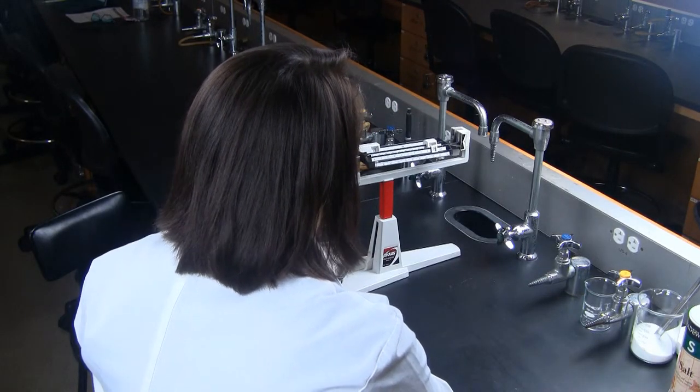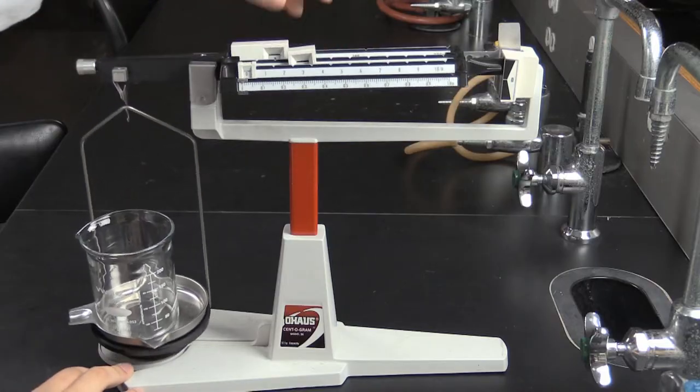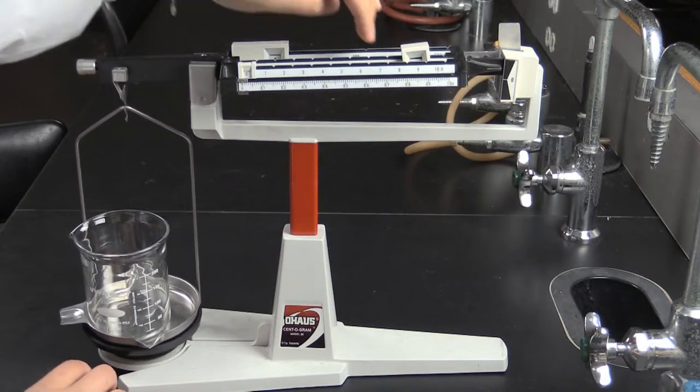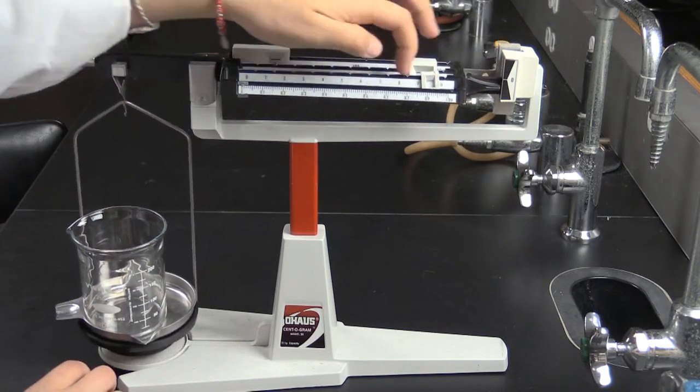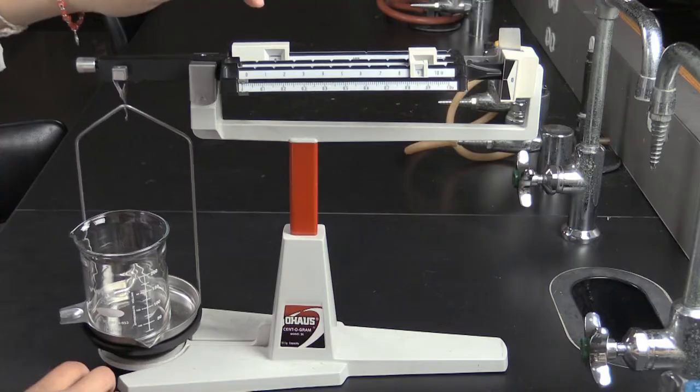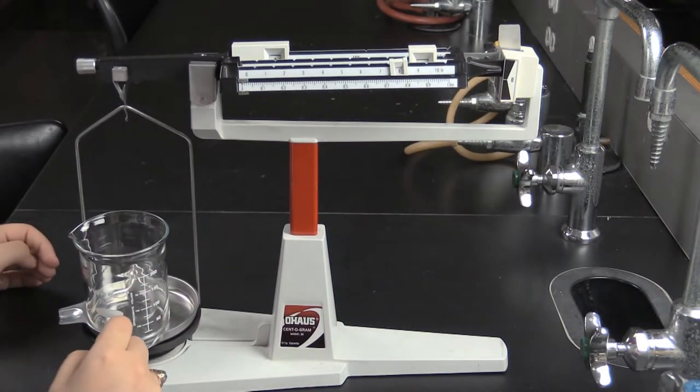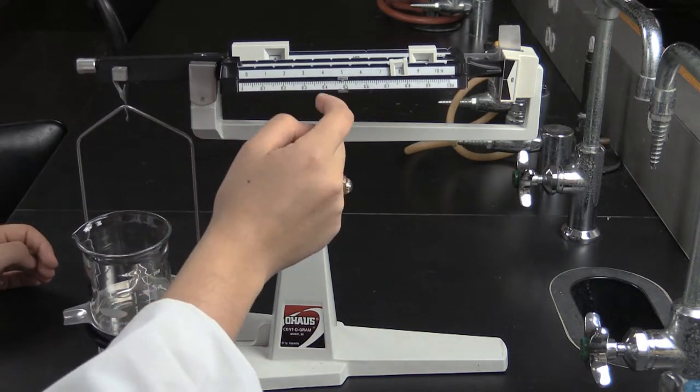Now slide the sliders back and forth until you reestablish balance. Start with the largest place value. In this case, it is the hundredths place. Move the slider until the beam goes out of balance in the opposite direction. Then move it back one slot.